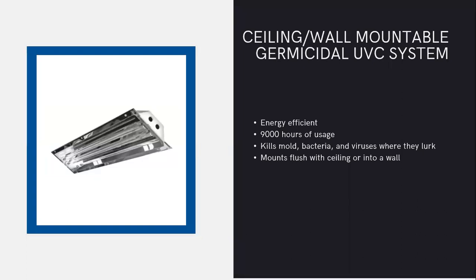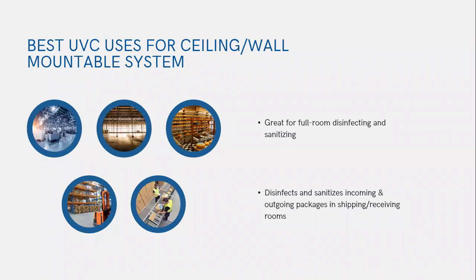Ceiling and wall mountable germicidal UVC systems are energy efficient, with 9,000 hours of usage, and they kill mold, bacteria, and viruses where they lurk. They can mount flush in the ceiling or into the wall, so they can be used safely in rooms to give you more direct control on disinfection, in addition to the air handling unit systems. Best management practices include using them for full room disinfection and sanitizing in distribution centers, aerospace facilities, food, retail, or storage. They're also great for disinfecting and sanitizing incoming and outgoing packages in shipping and receiving rooms.